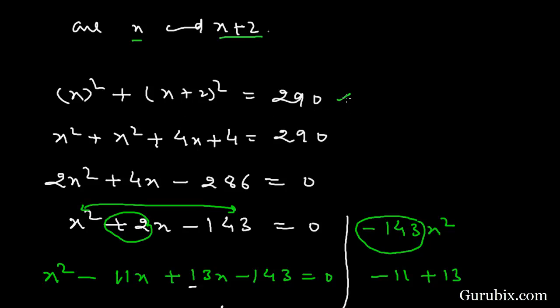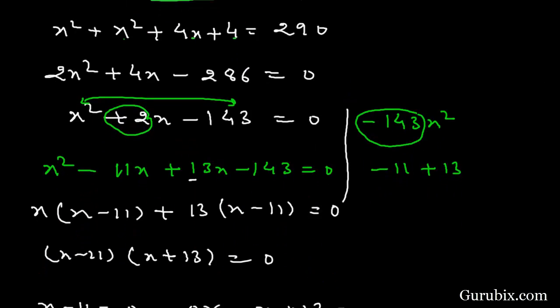And now we shall extend this whole square of x plus 2, then we have x squared plus x squared plus 4x plus 4. This means we have 2x squared plus 4x plus 4 equals to 290.